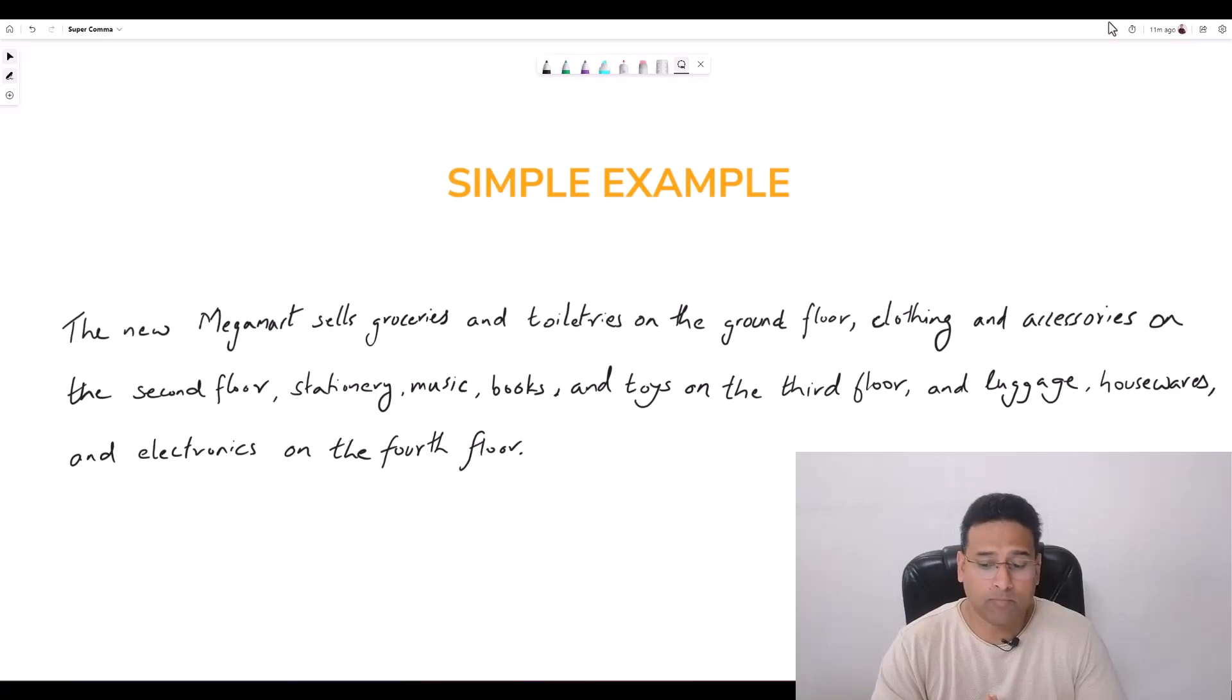The new megamart sells groceries, toiletries on the ground floor, clothing and accessories on the second floor, stationery, music, books and toys on the third floor and luggage, housewares and electronics on the fourth floor. So pretty straightforward sentence. It seems to be giving us a list of things. And how do we construct a list in a sentence? We separate the entities with the help of commas. So on the surface, this looks like a pretty decent sentence.